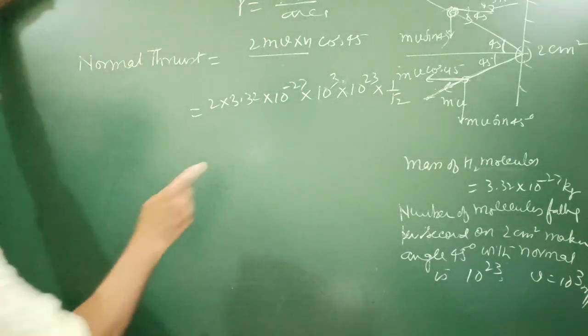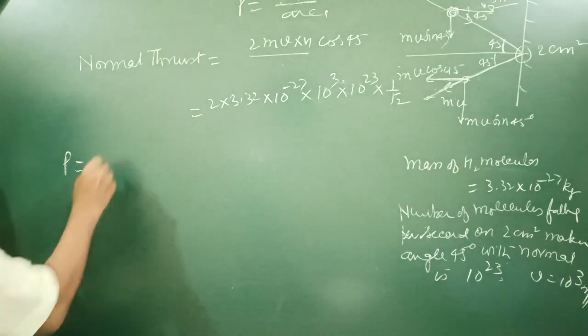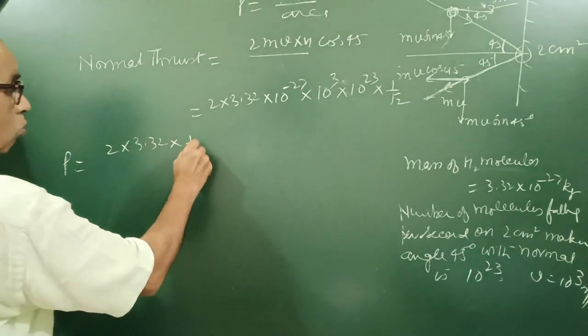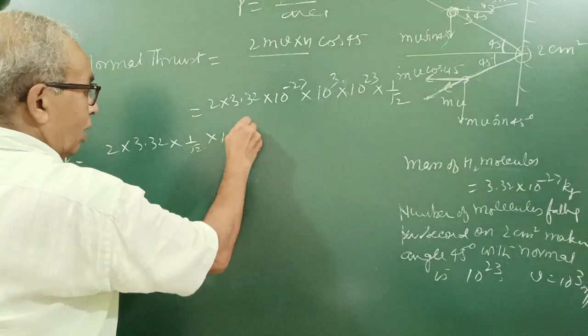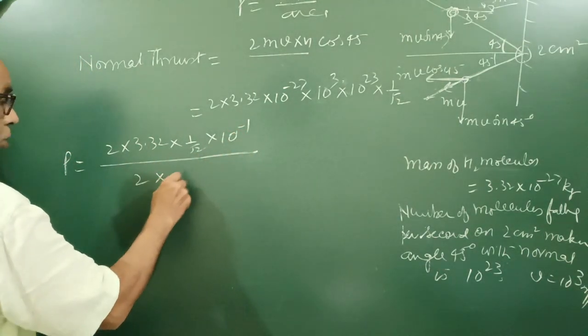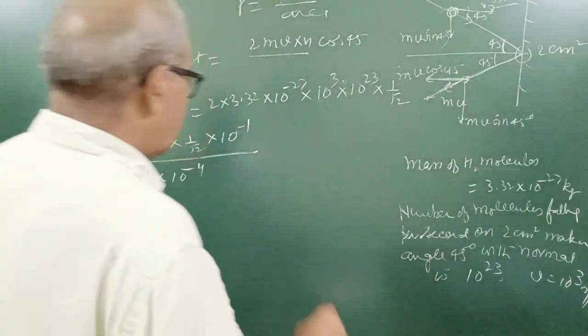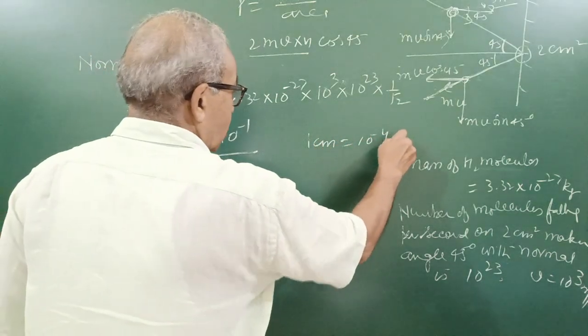So this is the normal thrust. Pressure is equal to force, thrust upon area: 2 into 3.32 into 1 by root 2 into 10 to the power 26 minus 1, upon area 2 into 10 to the power minus 4 meter square, because it is centimeter square.